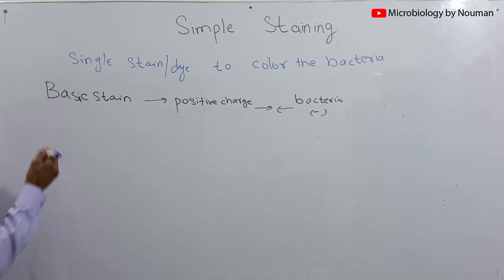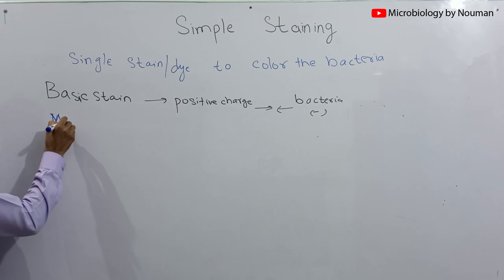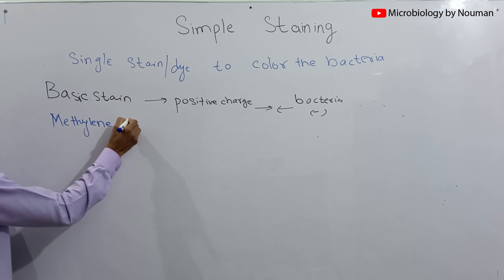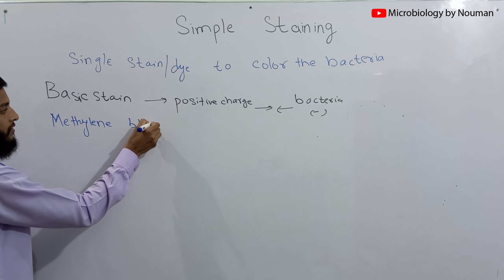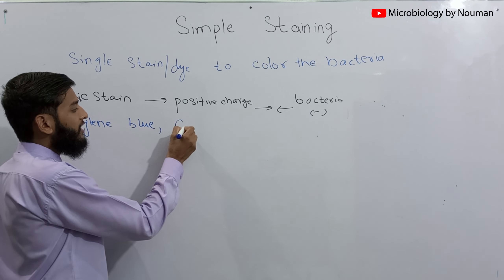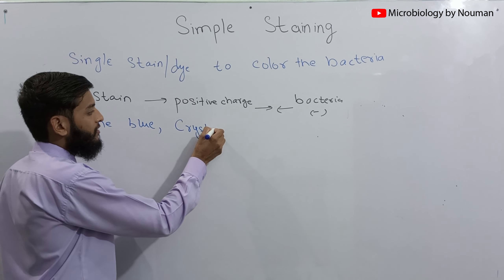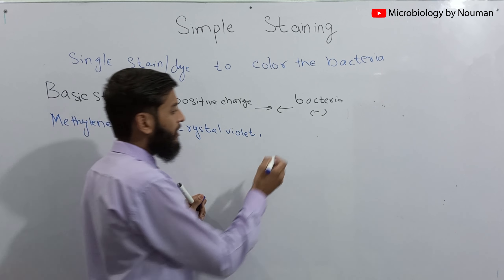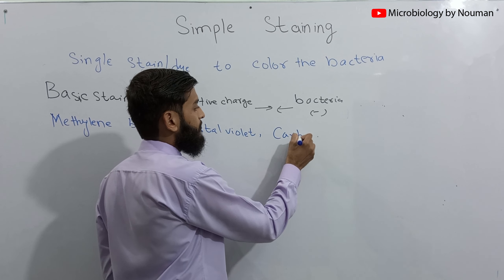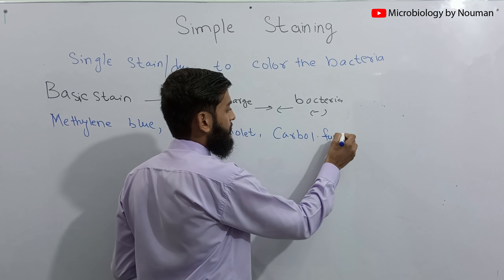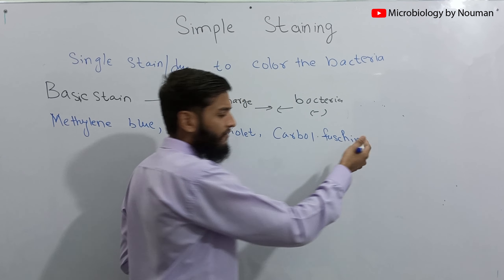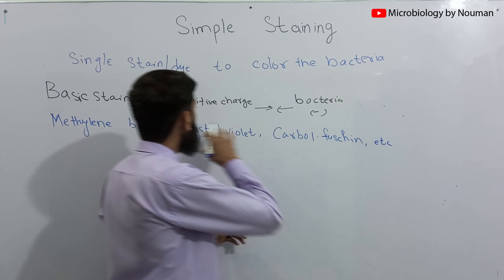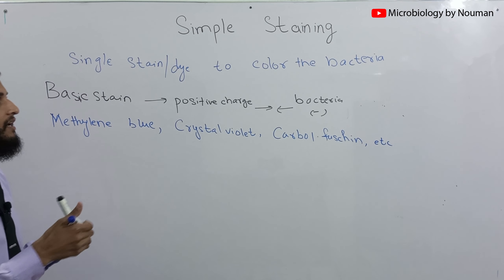Examples of basic stains that can be used in simple staining: the most commonly used stain is methylene blue. Another stain, crystal violet, can be used. Carbol fuchsin can also be used. Safranine and many other types of basic stains that carry a positive charge can be used in simple staining method.